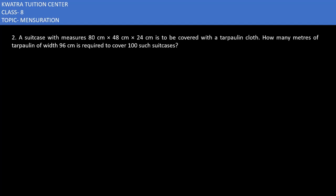Let's start with question number 2. It says a suitcase with measures 80 cm by 48 cm by 24 cm is to be covered with a tarpaulin cloth. How many meters of tarpaulin of width 96 cm is required to cover 100 such suitcases?